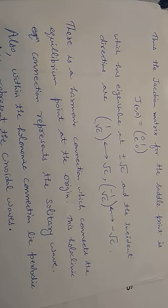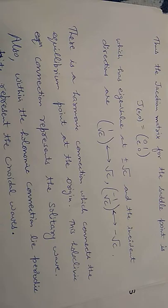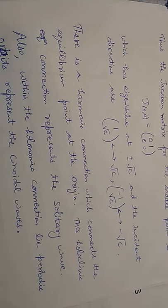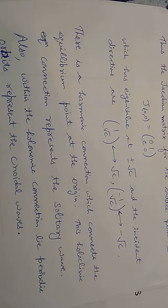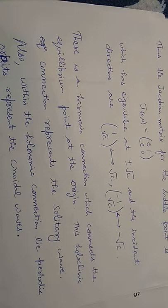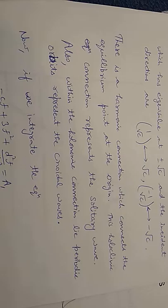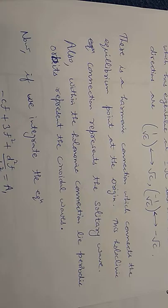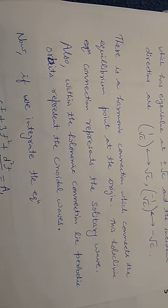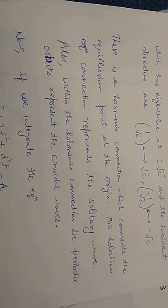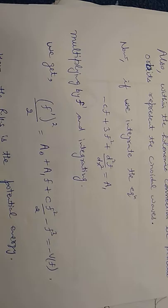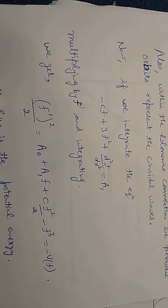The Jacobian matrix for the saddle point is J(0,0) equals [0, 1; c, 0], which has eigenvalues plus or minus square root c. The incident directions are [1, √c]^T and [1, -√c]^T. There is a homoclinic connection which connects the equilibrium point at the origin. This homoclinic connection represents the solitary wave.